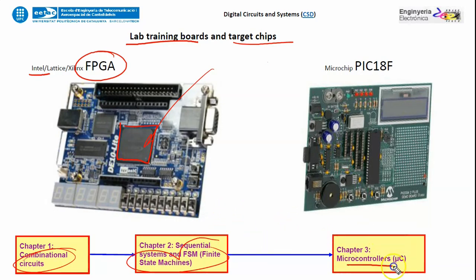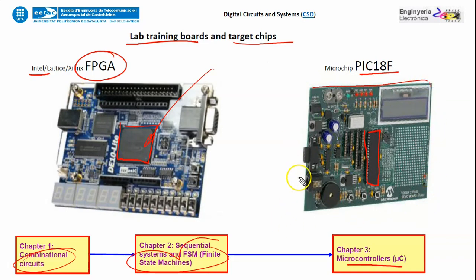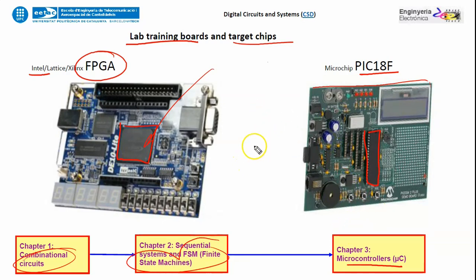In chapter three, practically the same idea applies, but this time we will use a microprocessor — a microcontroller from Microchip, for example a PIC18. This is the type of board we will have for prototyping, where our application will be downloaded.